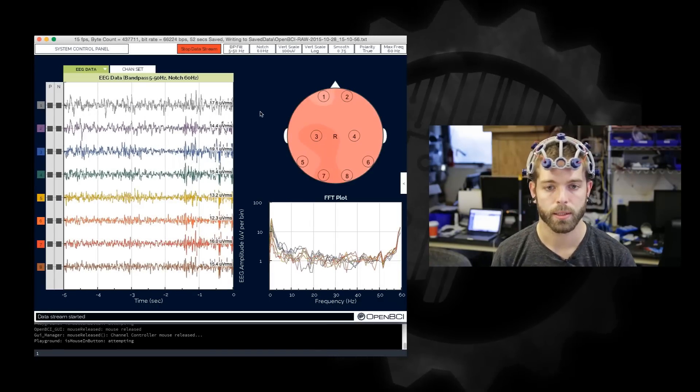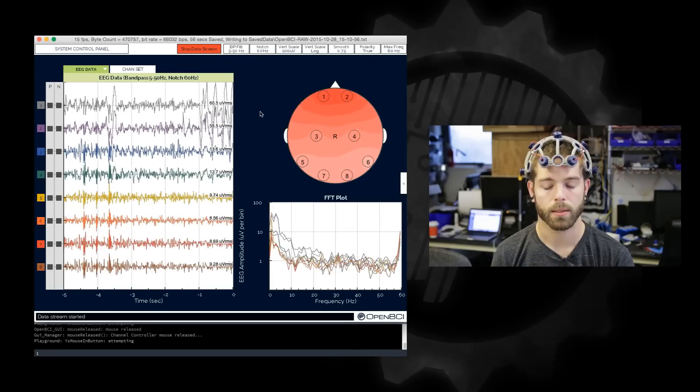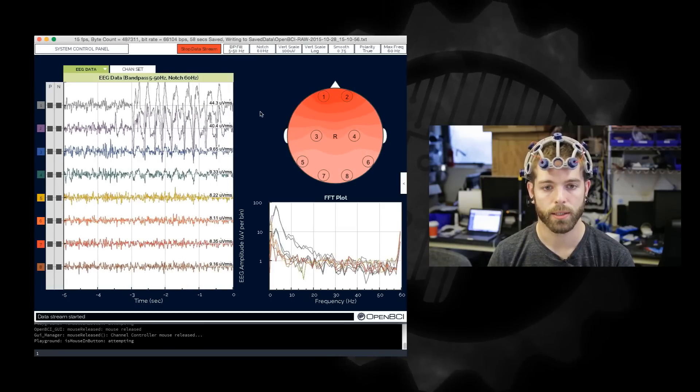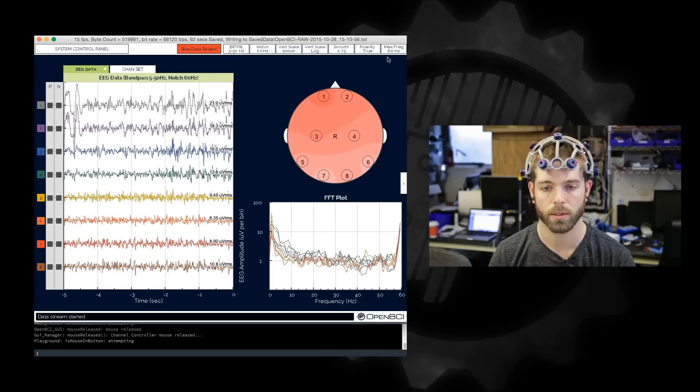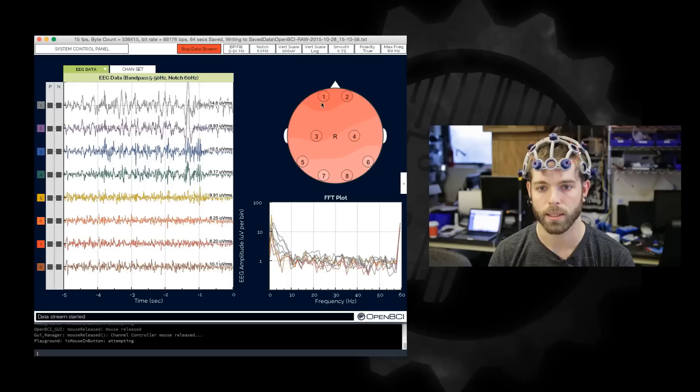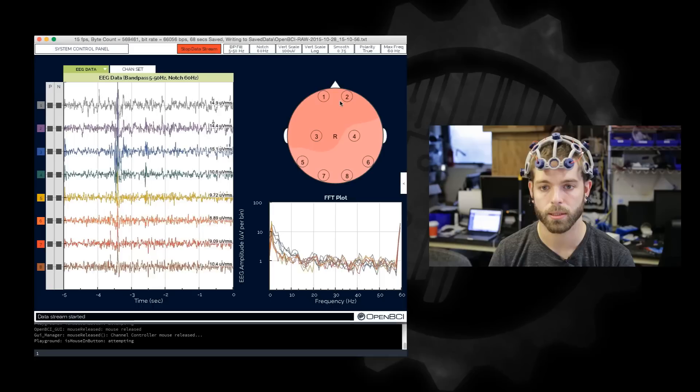So the first thing I'm going to demo is just some simple eye blinks. If I blink my eyes you can see those very distinct EMG artifacts in channels one and two, and you'll also be able to see the opacity of the color in the heat map of my head light up as those signals get stronger.